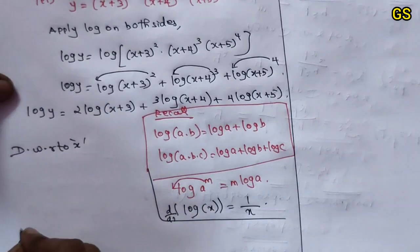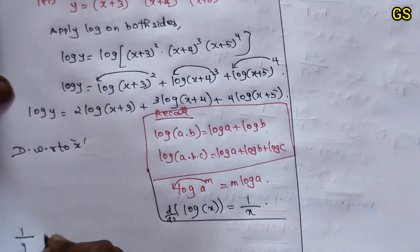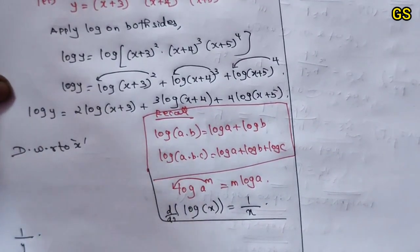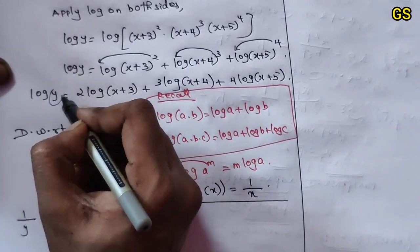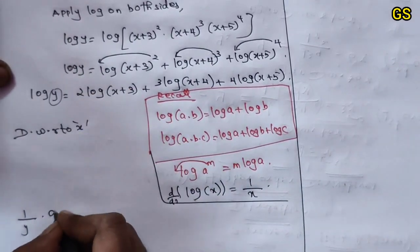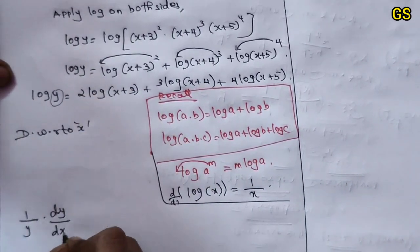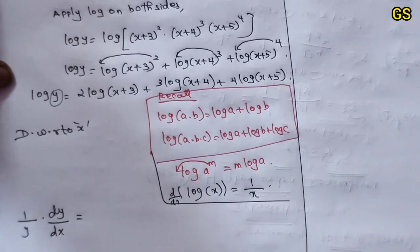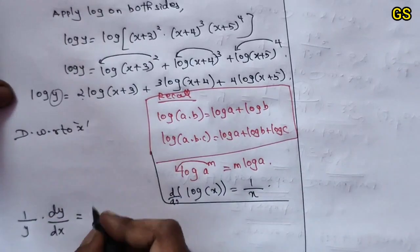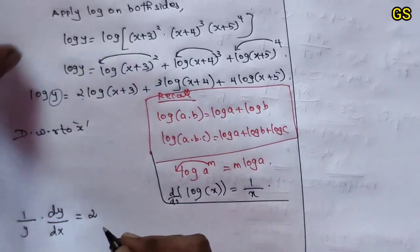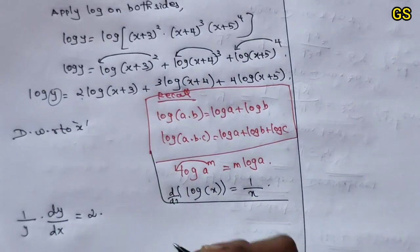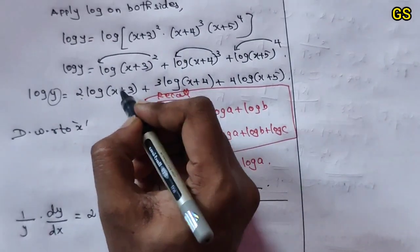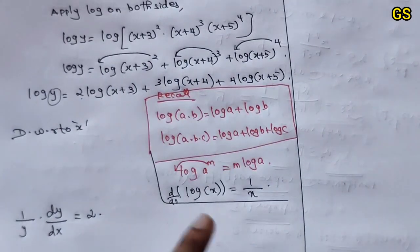Wherever there is a variable y, differentiate and mention dy/dx. The constant multiplication and division rules apply. So differentiating log y gives 1/y · dy/dx on the left-hand side.